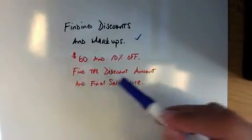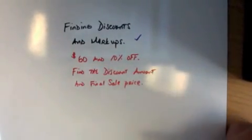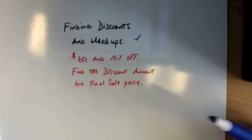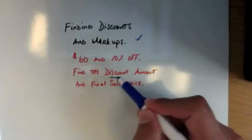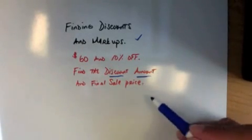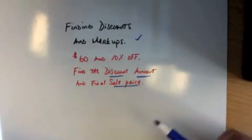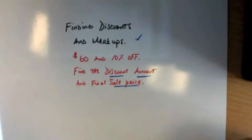So here we have an example: $60 and we're going to take 10% off. You've probably seen this at the store, so we're going to go through it nice and easy. It says find the discount amount and then find the sale price. So it's two different parts of the question.